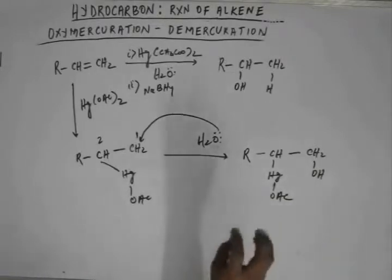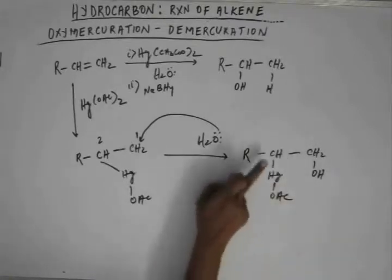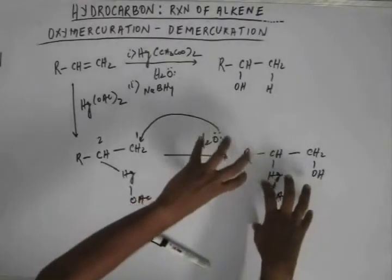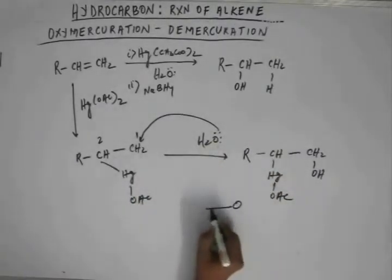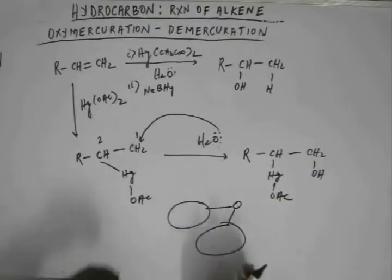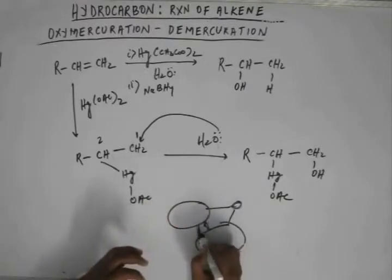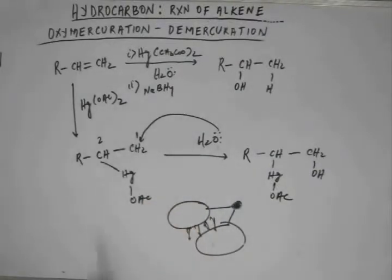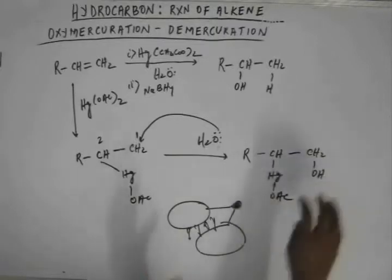That stability will come from steric hindrance, because mercury is a big atom and attached with acetate makes it even bigger. On this carbon we have an R group, which would generally be a larger group. If we have two large groups on the same carbon, there would be lots of hindrance. This carbon has mercury acetate and R group together, so the gap between these two groups would be very small, making it highly unstable for a tiny carbon to hold two bulky groups.